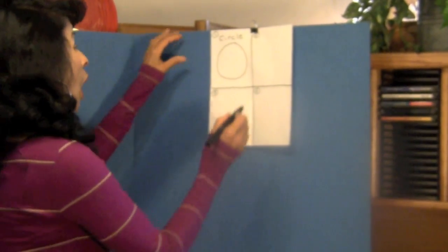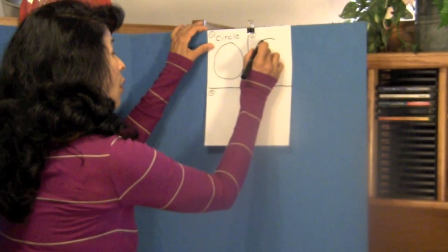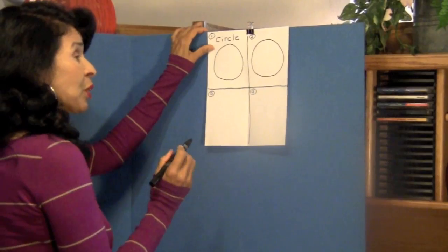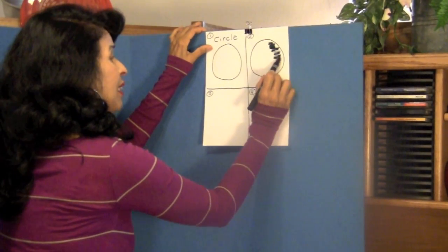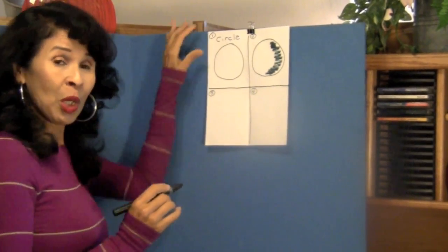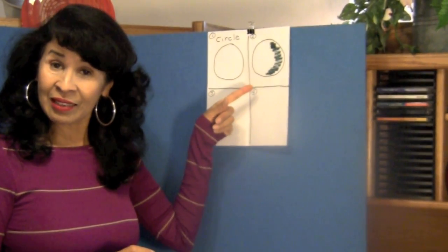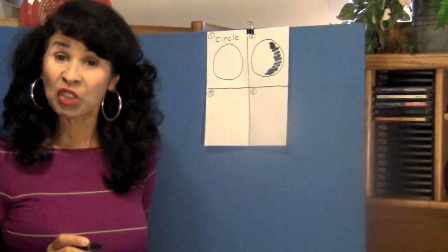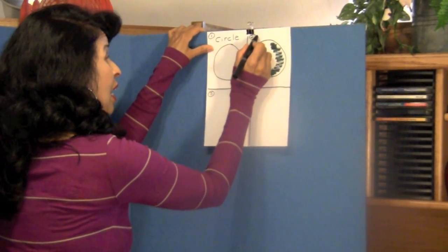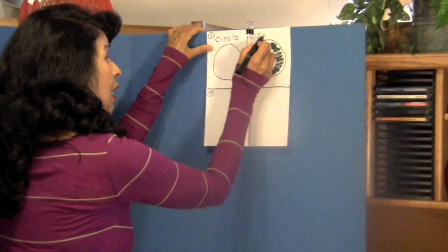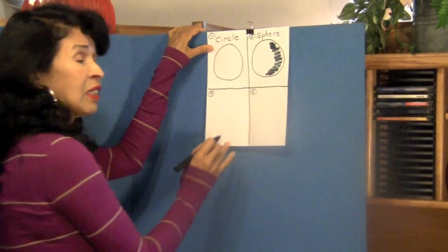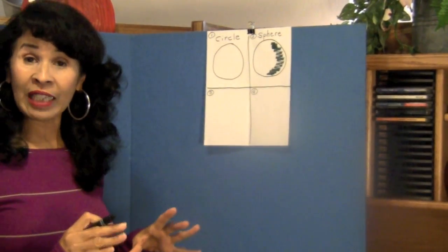In box number two I want you to draw another large circle. This circle we're going to shade it, so shade the side of it. That shading will give it some body. Do you know what this is called now? What shape is this? Did you say sphere? You're correct. And how do we spell sphere boys and girls? Capital S-P-H-E-R-E. Sphere. Like a ball is a sphere.